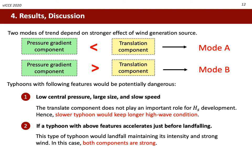Considering the results, typhoons with the following features would be potentially dangerous. One is a typhoon with low central pressure, large size, and slow speed — this type tends to have strong wind by pressure gradient, so the translation component does not play an important role for Hs development, and a slower typhoon would keep high wave conditions for long duration. The second case is where a typhoon with those features accelerates just before landfalling, because both wind components would then be strong.